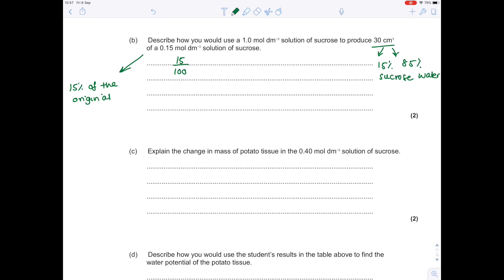And then 85% of 30 is 25.5 cm³ of distilled water.